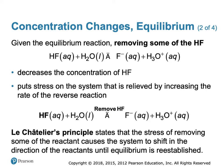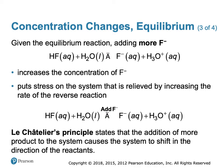Now, if we remove some HF — decreasing the amount of HF — the equilibrium is going to reestablish itself to favor an increased rate of the reverse reaction. Some products will go to form more reactant. So, by removing HF, in order to relieve stress, we increase the rate of the reverse reaction.